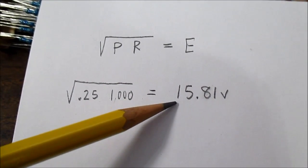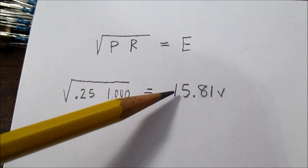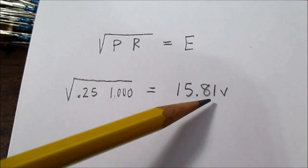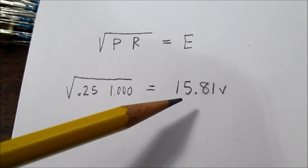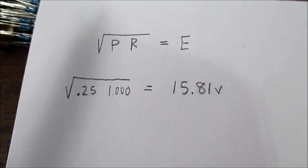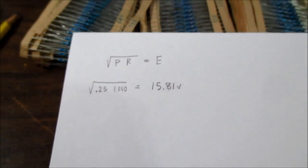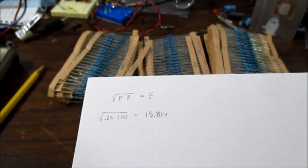So the maximum I can put on a one K quarter watt resistor is 15.81 volts. If I go any higher I'm going to be exceeding that quarter watt limit. Well hope this helps you out and thanks for watching.